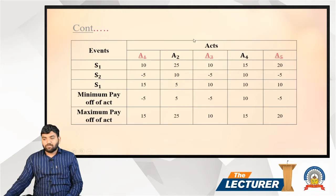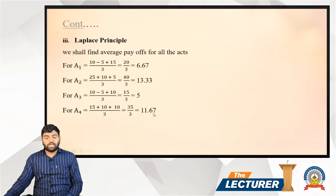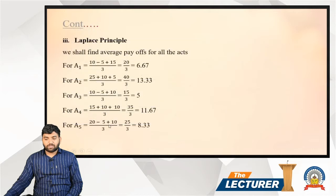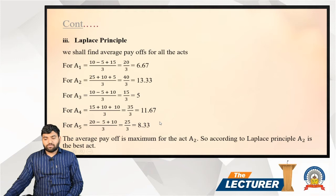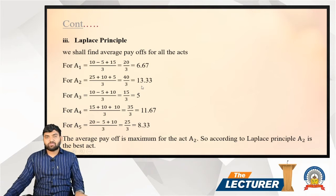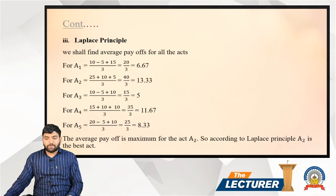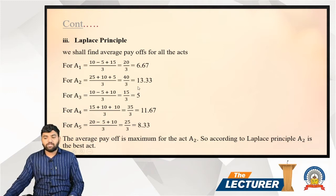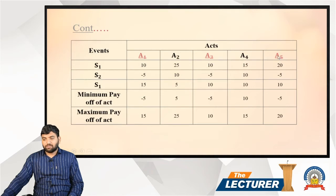For a4: (15 + 10 + 10) = 35 divided by 3 = 11.67. For a5: (20 + minus 5 + 10) = answer is 8.33. The average payoff is maximum for a2, which is 13.33. Since 6.67, 5, 11.67, and 8.33 are all less than 13.33, we select a2 as the best act according to the Laplace principle.